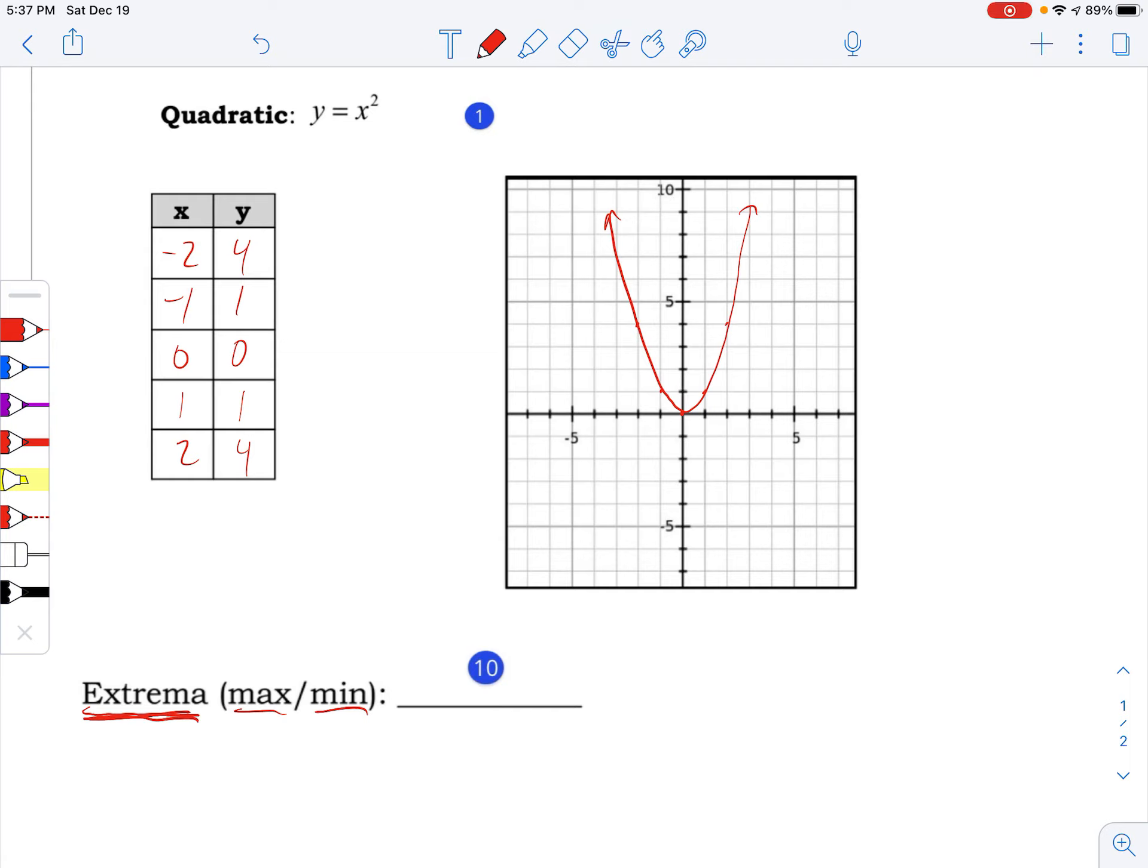In the future, we're going to study functions that do crazy things. For example, you might have a function with lots of ups and downs. This function would have two different local maximums and two different local minimums. All of those points are called extrema. Extrema can be plural, so it's just locations on a graph where something interesting happens—where there's a high point or a low point.